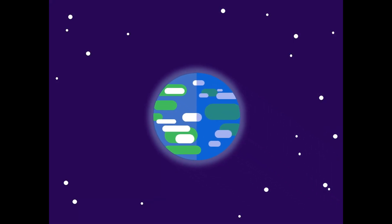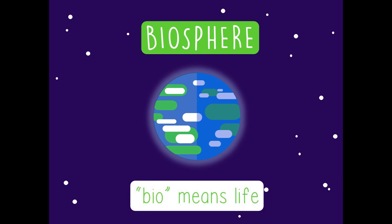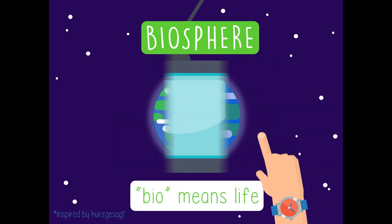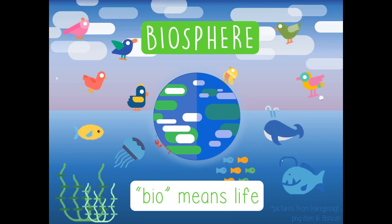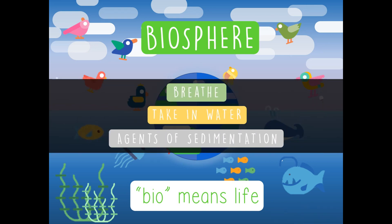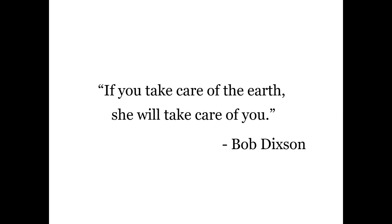For our last sphere, we have the biosphere. The prefix 'bio' means life, which tells us that the biosphere includes all forms of life on Earth — from the deepest parts of the ocean to the highest parts of the atmosphere. Without the biosphere, the rest of the other spheres would not look like the way they are now. Living things breathe, take in water, and are agents of sedimentation. If you take care of the Earth, she will take care of you.